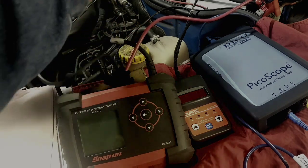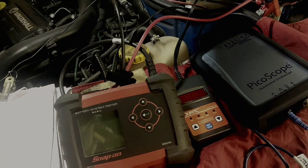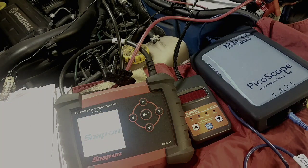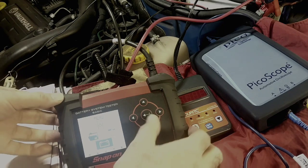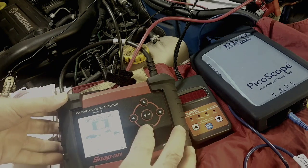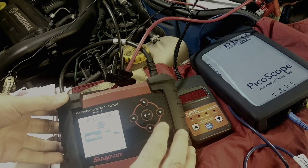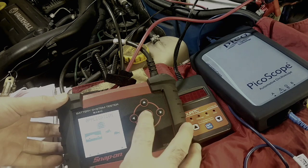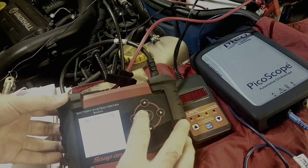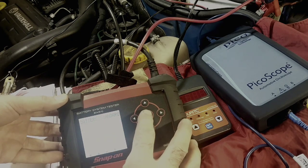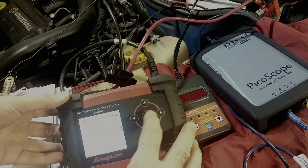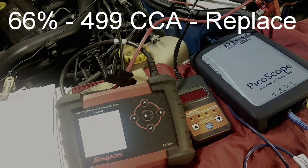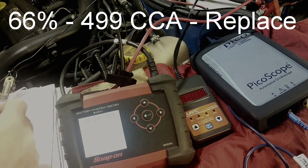The Snap-on should be ready with the right settings on it. Regular battery, EN, and it's 750. So let's take that down, and that is 499, that's 66%.